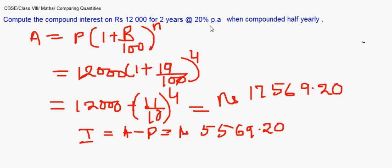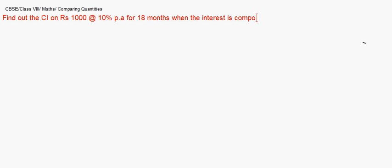We now take up another question where it is compounded half yearly, but the number of years is given in months. Find the compound interest on rupees 1,000 at a rate of 10 percent per annum for 18 months when the interest is compounded half yearly. So the principal is 1,000, rate is 10 percent, for 18 months, compounded half yearly.